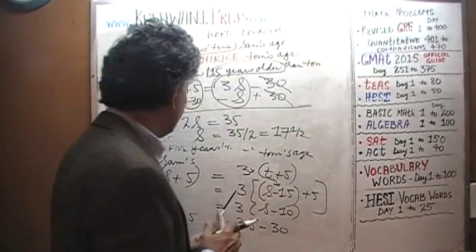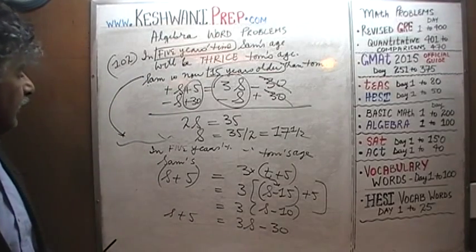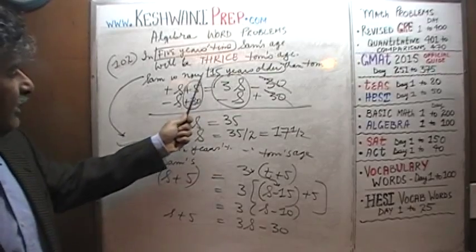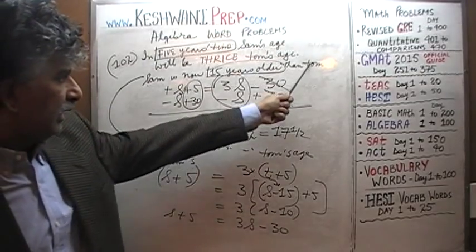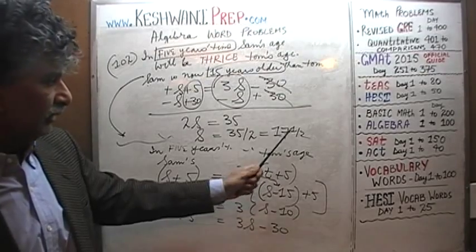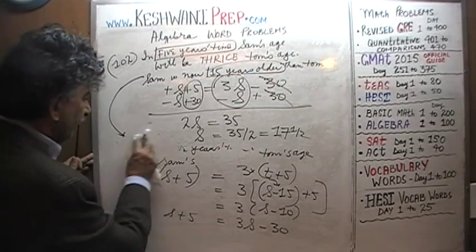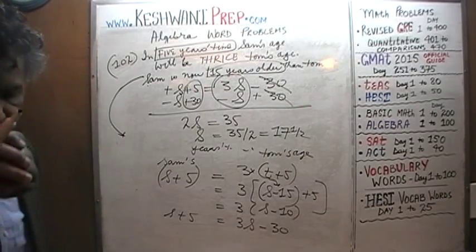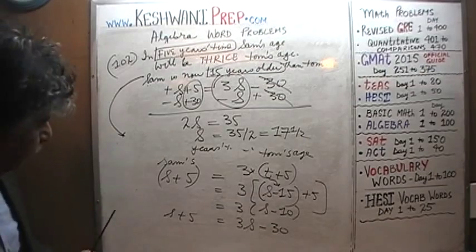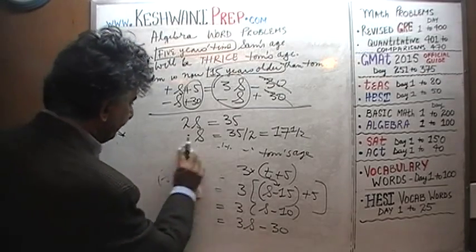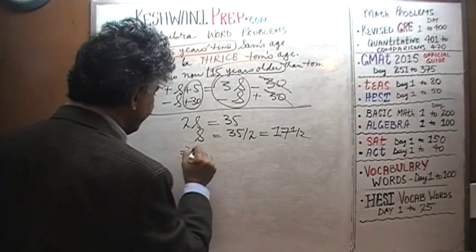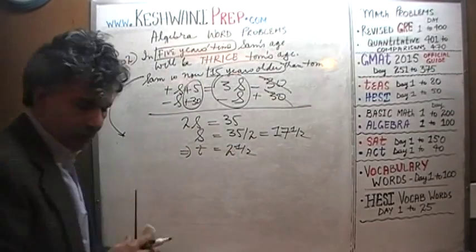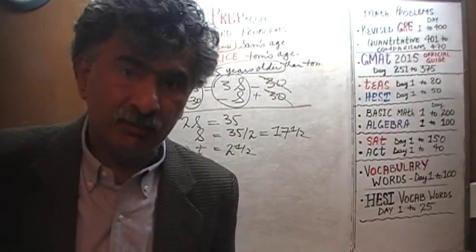Sam is 17 and a half years old. Since Sam is now 15 years older than Tom, Tom must be 15 less than Sam: Tom is 2 and a half years old. We're not quite done yet — I like to verify our work to confirm it is correct.